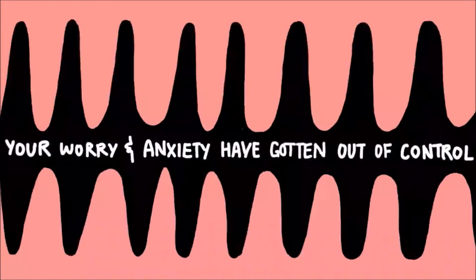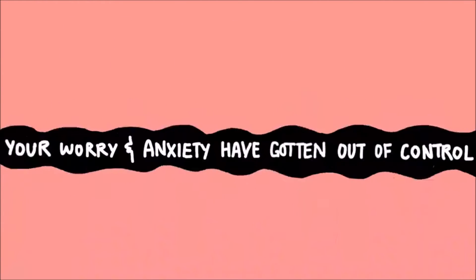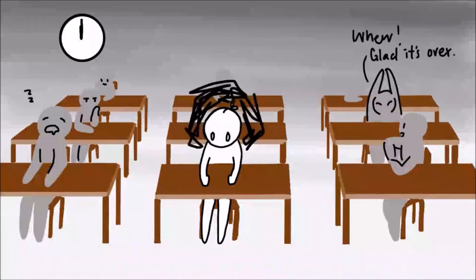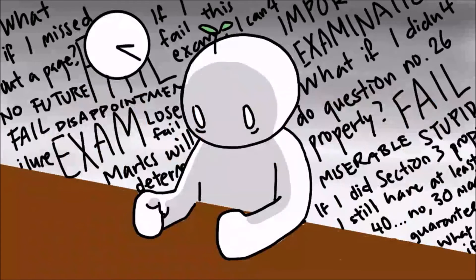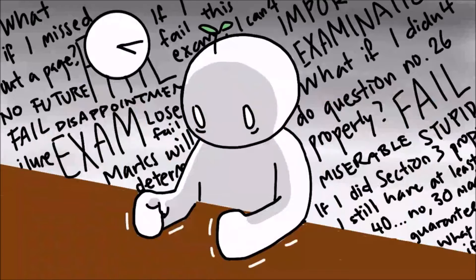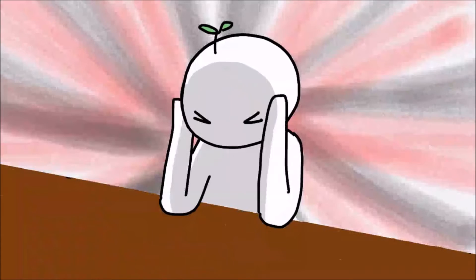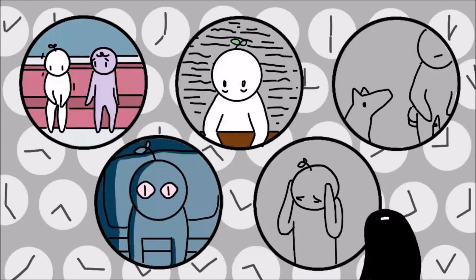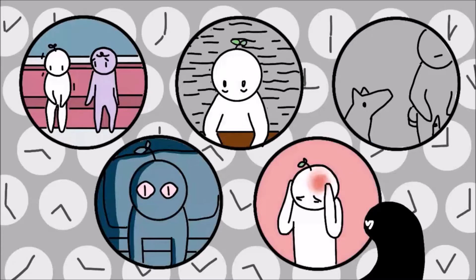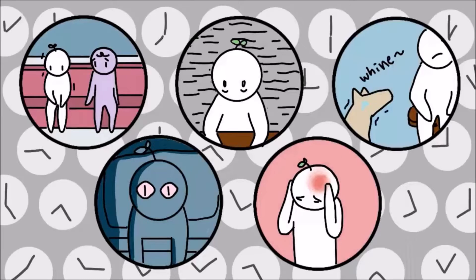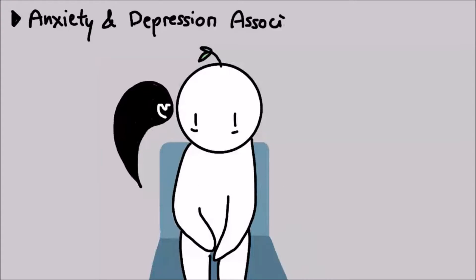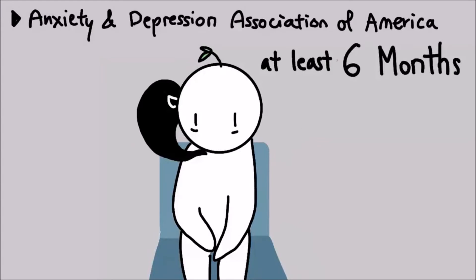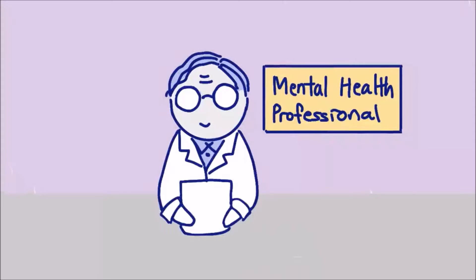Number 3: Your worry and anxiety have gotten out of control. Have you ever found yourself worrying but can't shut it off? According to the National Institute for Mental Health, it may be a sign of an anxiety disorder. Other signs of anxiety disorders include having problems relaxing, insomnia, racing thoughts, unexplained aches and pains, or being easily irritated. The Anxiety and Depression Association of America suggests that if you've ever felt this way on most days for at least six months, you should consider talking to a mental health professional about your symptoms.